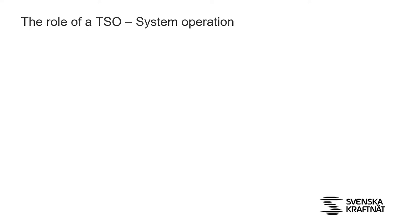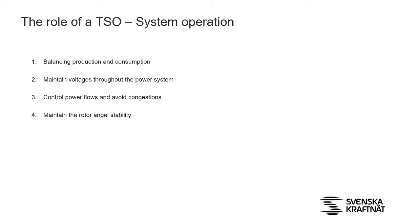So, what is a TSO? What are the system responsibilities? We have four golden steps. We are in charge of keeping the balance in the system between production and consumption in the short term. We also maintain voltage throughout the power system. We need to control power flows and avoid congestions to make sure we can transport power from A to B. We need to maintain rotor angle stability to make sure we have no oscillations in the power system. These are the four main steps, and we must also be able to restore the system if we fail with one or several of them.